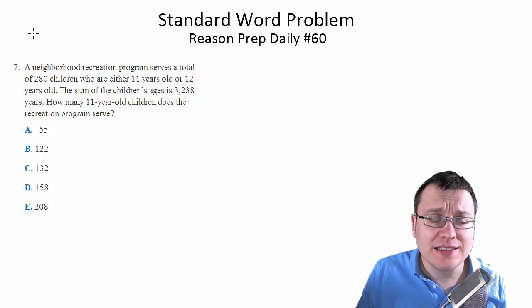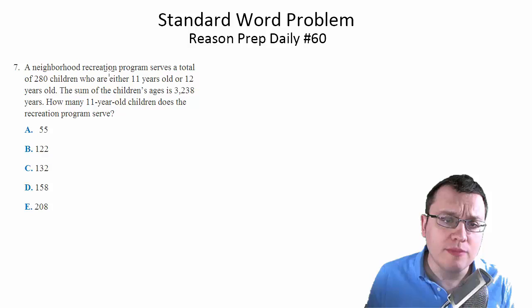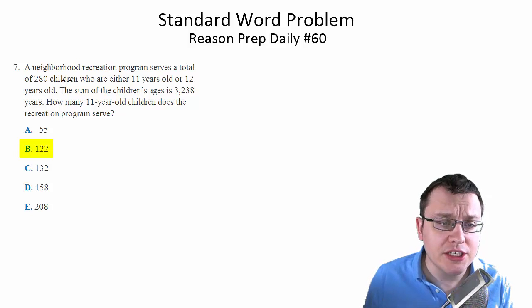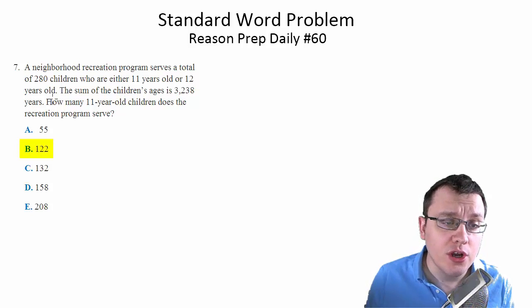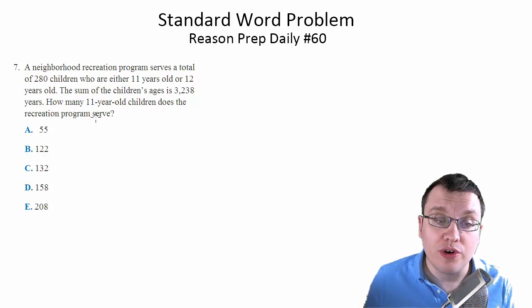Go ahead and try this ACT math question. A neighborhood recreation program serves a total of 280 children who are either 11 years old or 12 years old. The sum of the children's ages is 3,238 years. How many 11-year-old children does the recreation program serve?